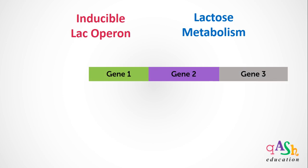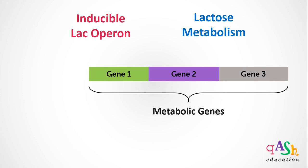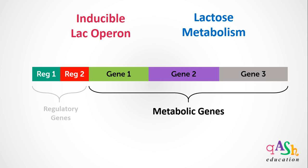There are three genes present on the lac operon of the metabolic category. These three metabolic genes will synthesize enzymes that help in the digestion of lactose. The other two genes are regulatory type genes that regulate the expression of the three metabolic genes.